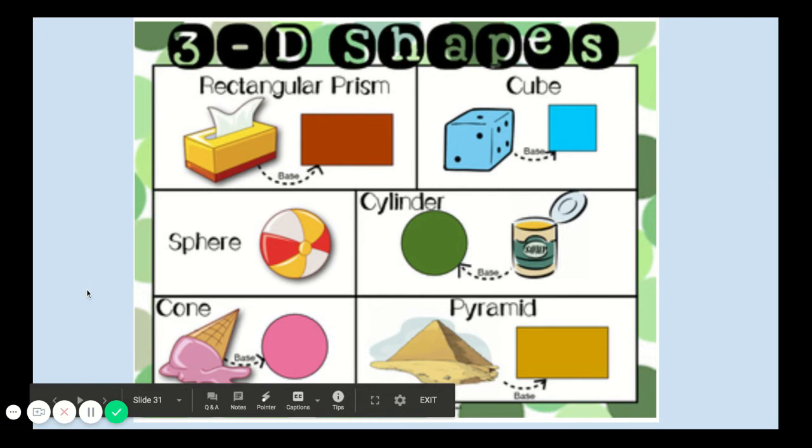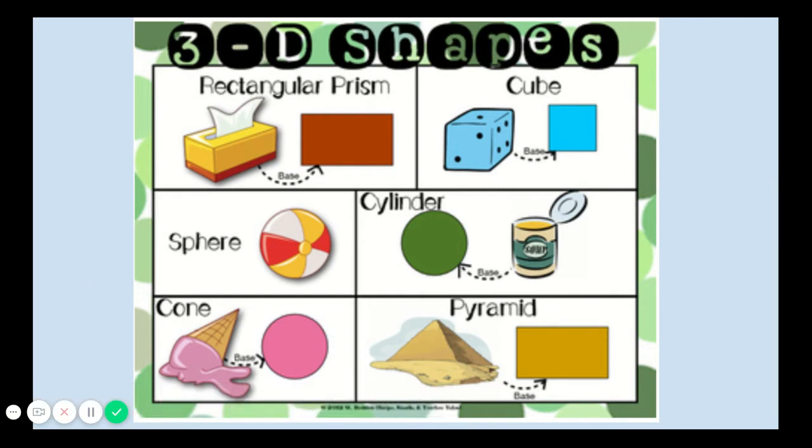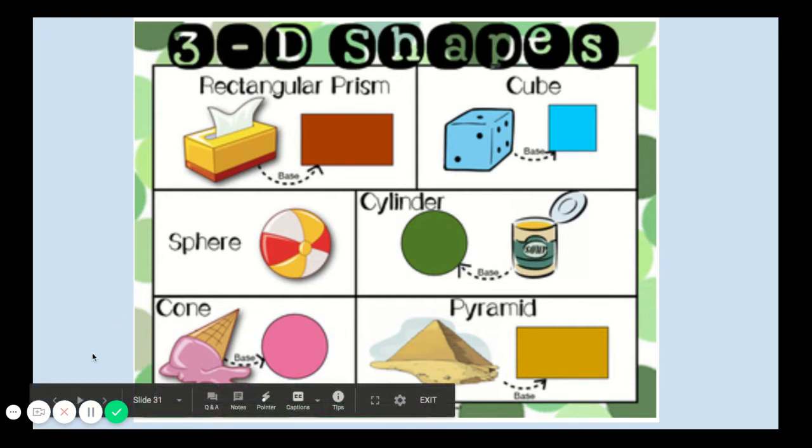The 3D shapes we learned this year are a rectangular prism, a cube, a sphere, a cylinder, a cone, and a pyramid.